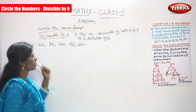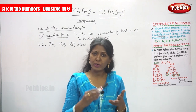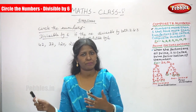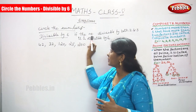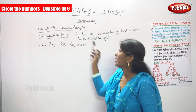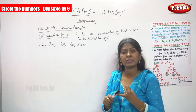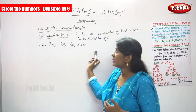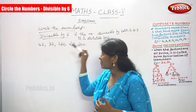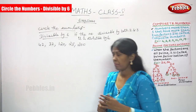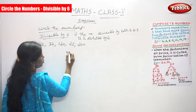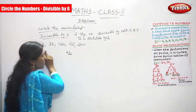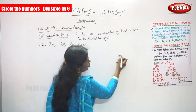First we take 42. The number 42 ends with 2, so it is automatically divisible by 2. If you want to verify: 42 divided by 2 gives quotient 21 and remainder 0.